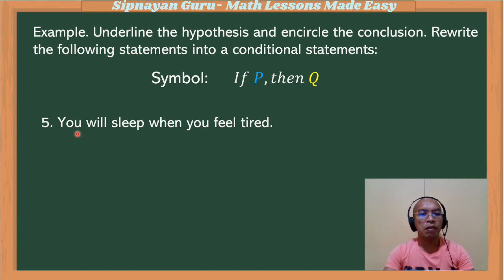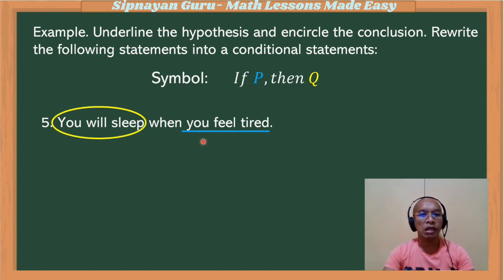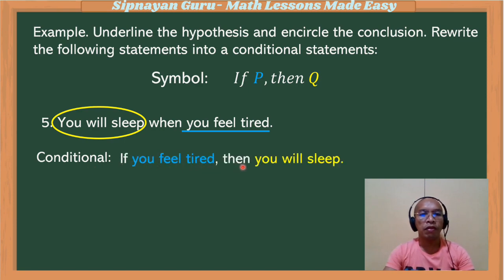Example number five: 'You will sleep when you feel tired.' This is a cause and effect statement. Our cause is 'you feel tired,' which is the hypothesis, and the effect 'you will sleep' is the conclusion. Therefore, our conditional statement is: 'If you feel tired, then you will sleep.'